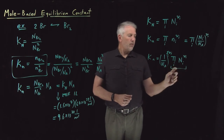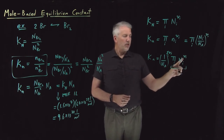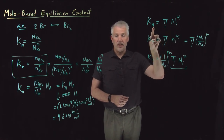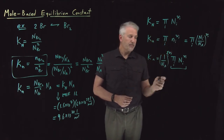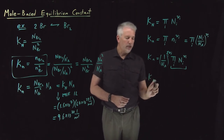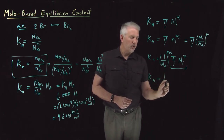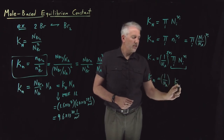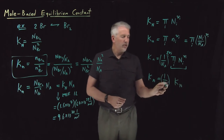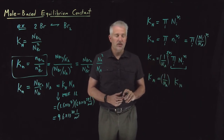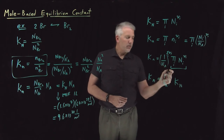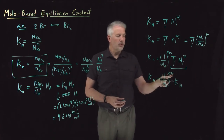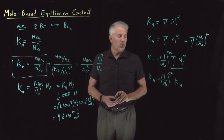So I've got 1 over Avogadro's number raised to the sum of all the stoichiometric coefficients, multiplying this product of molecules to their stoichiometric coefficients. That product of molecules raised to their stoichiometric coefficients is exactly the equilibrium constant denominated in terms of molecules. So I can rewrite this as: the mole-based equilibrium constant K sub little n equals (1/N_A)^(Δν) times K sub big N, where Δν is the sum of stoichiometric coefficients — the total change in the number of molecules.